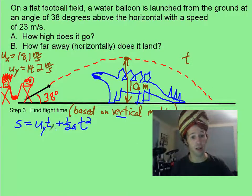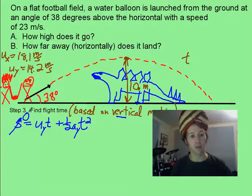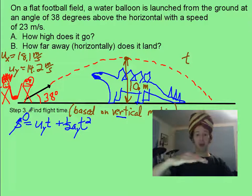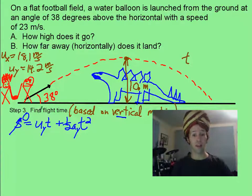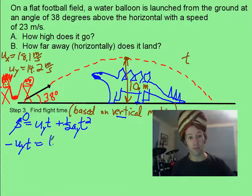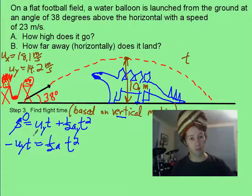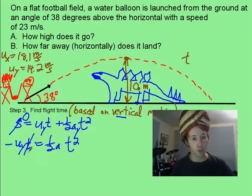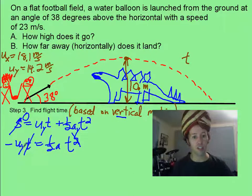So you put in your initial vertical velocity, your vertical acceleration, and s is going to be zero, because it's going to go up and it's going to come back down with the exact same displacement that it was at. And that makes your life easier when you rearrange this equation this way, because you don't have to do the quadratic formula, because I'm never doing that again. And one of your t's cancels out.